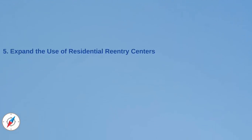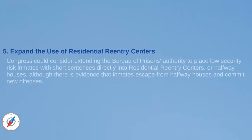Fifth, Congress could consider extending the Bureau of Prisons' authority to place low-security risk inmates with short sentences directly into residential reentry centers, or halfway houses, although there is evidence that inmates escape from halfway houses and commit new offenses.